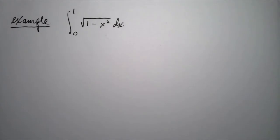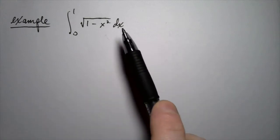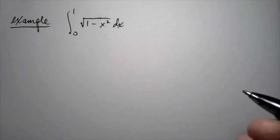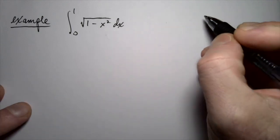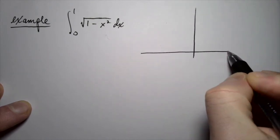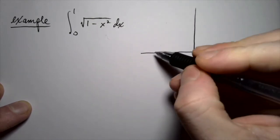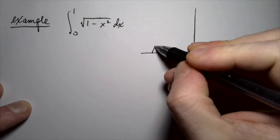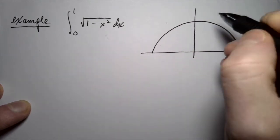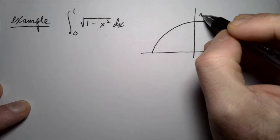For the next example, let's look at the integral of the square root of 1 minus x squared from 0 to 1. Note that I always write my dx after the function that I'm integrating — it's just good form, the right notation. First of all, what's the graph of this function? This function is actually the unit circle, or rather the top half of the unit circle.